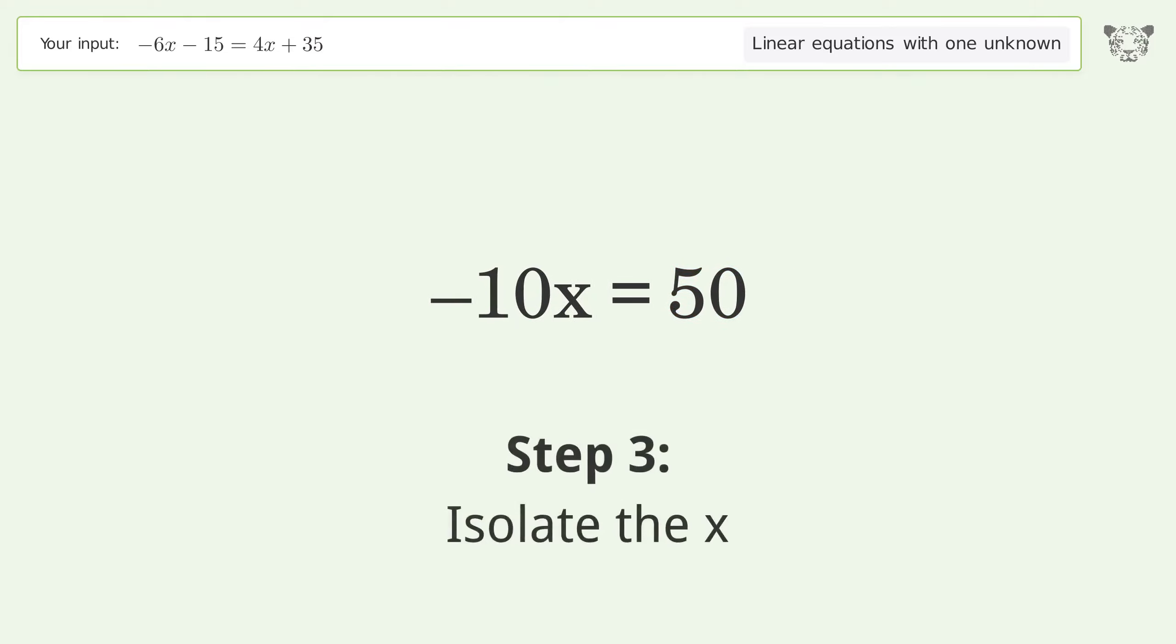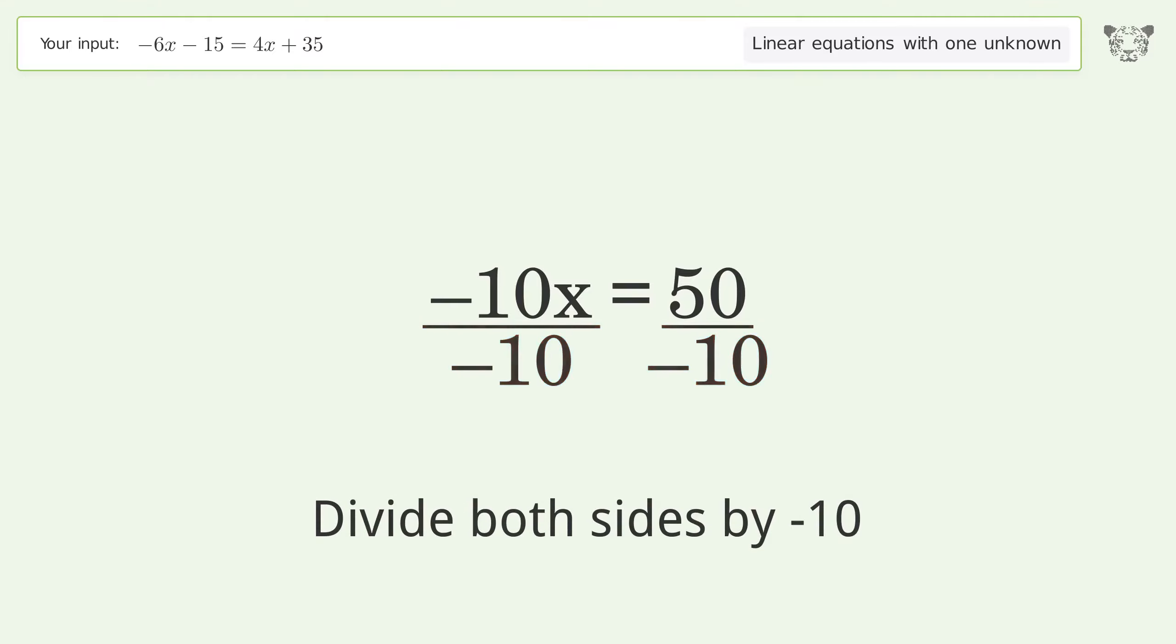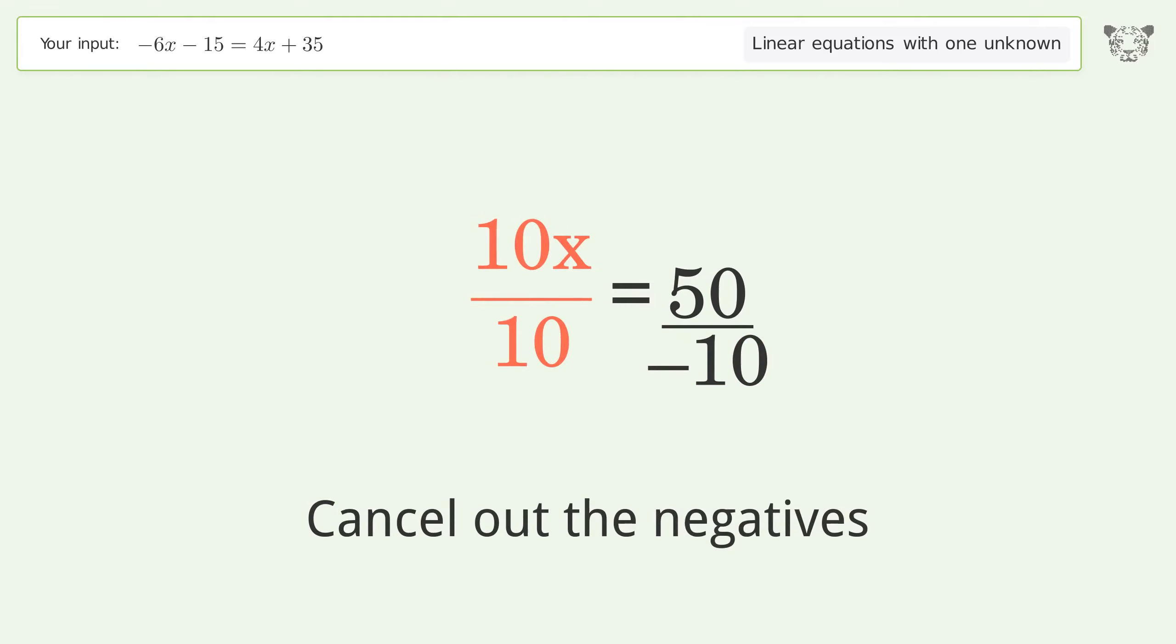Isolate the x. Divide both sides by negative 10. Cancel out the negatives. Simplify the fraction.